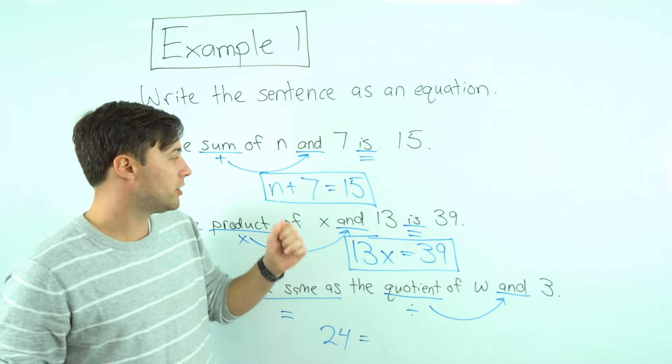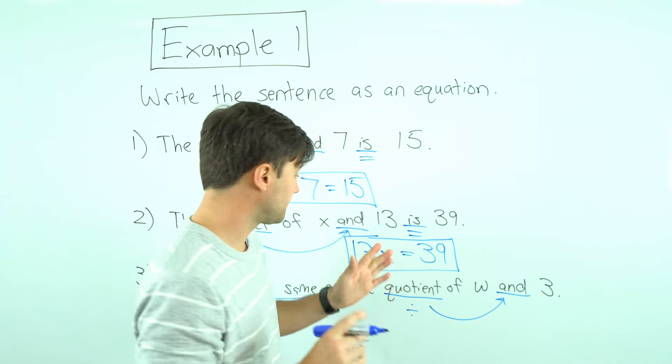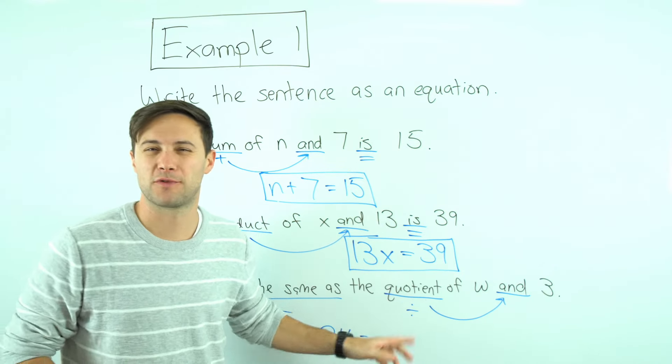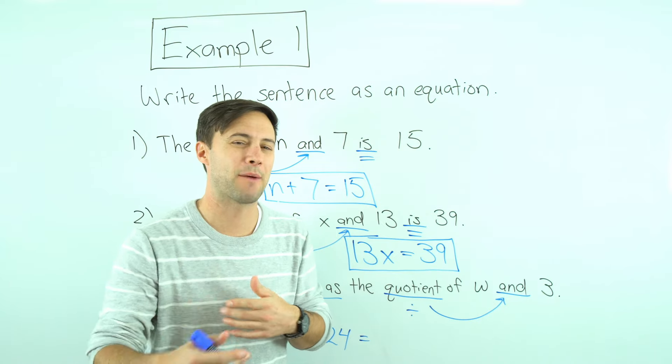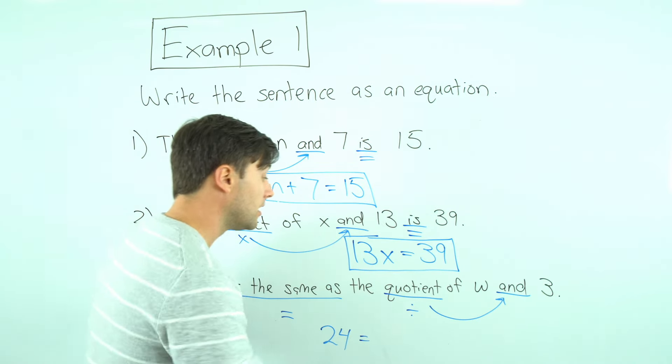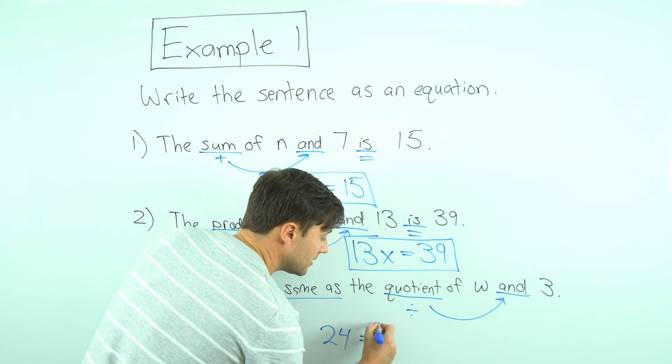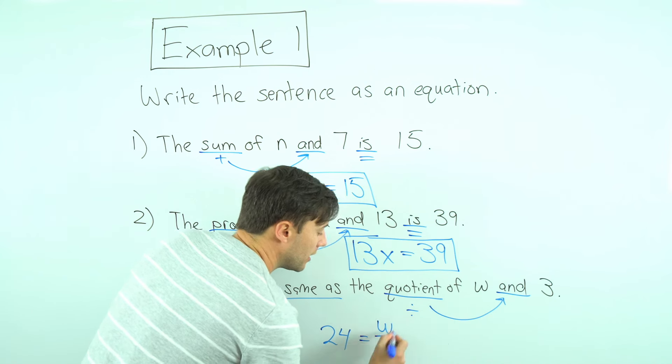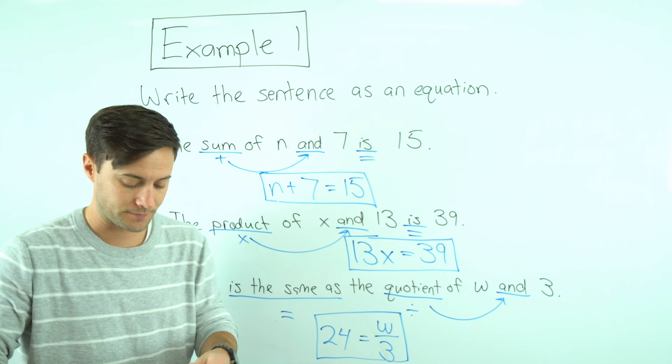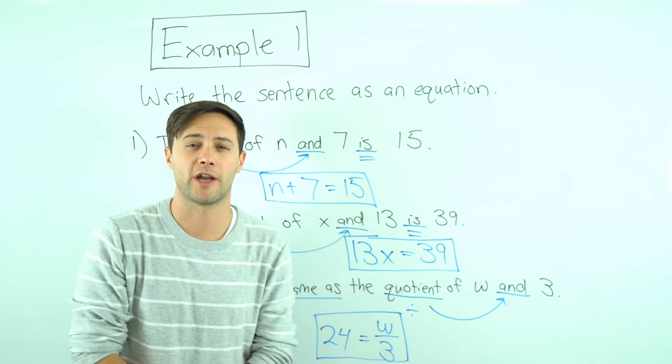Just like we don't use the little x for the times symbol, I'm not going to use this for division either. You should get in the habit of writing it like a fraction. So w divided by three is w over three. There is my equation. Here's something to try on your own.